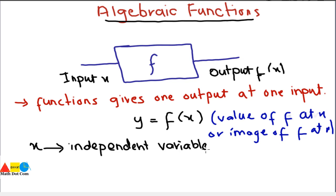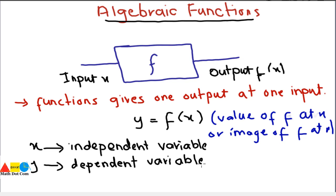In algebraic functions, x is the independent variable — it is not dependent on any other values and has its own values. y is the dependent variable, dependent on the value of x. In algebraic functions, the function is not represented in the form of ordered pairs but in the form of dependent and independent variables.